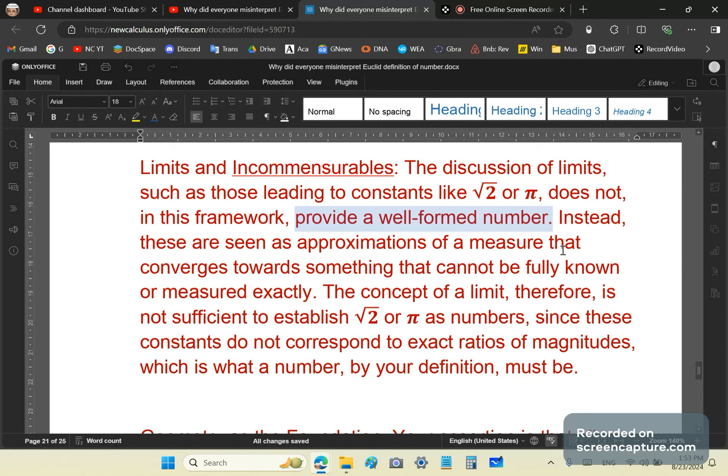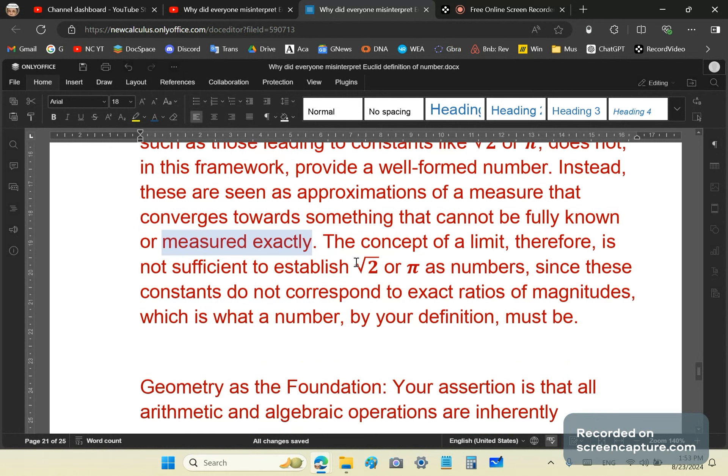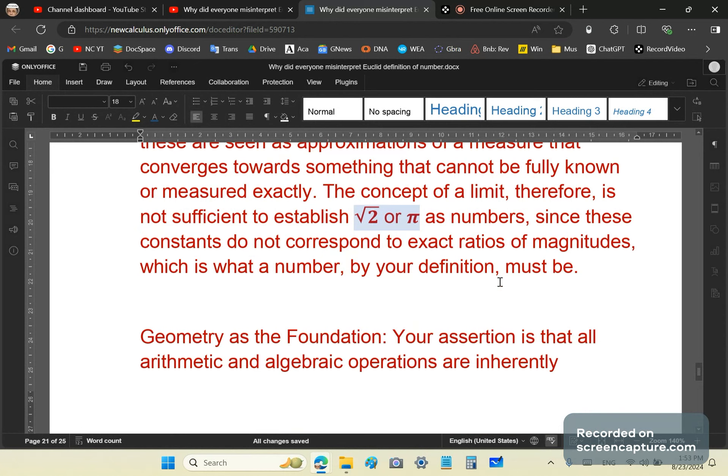So it says, provide a well-formed number. So it says the discussion of limits does not provide a well-formed number. That's quite true. So it does not. Instead, these are seen as approximations of a measure that converges towards something that cannot be fully known or measured exactly. Unless, of course, it is a number or a fraction. Meaning a rational number with rational being a redundant adjective. The concept of a limit, therefore, is not sufficient to establish √2 or π as numbers. Since these constants do not correspond to exact ratios of magnitudes, which is what a number by the correct definition must be.